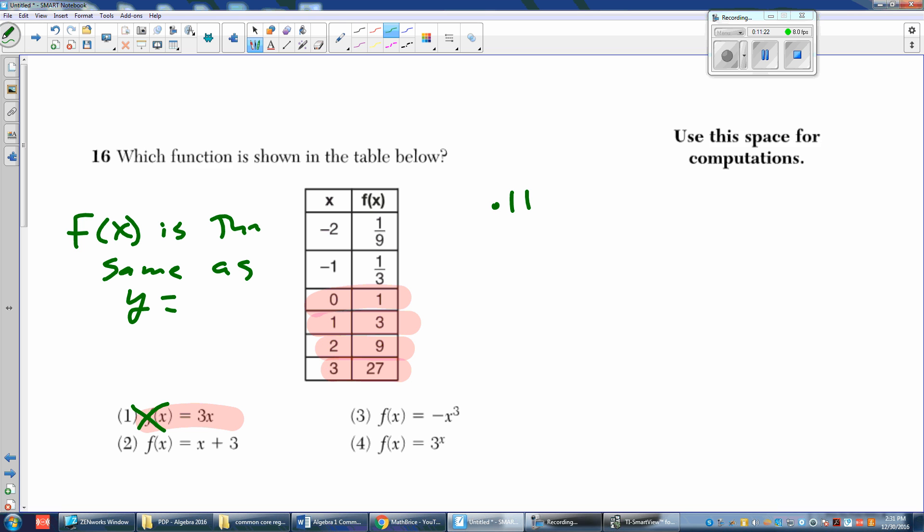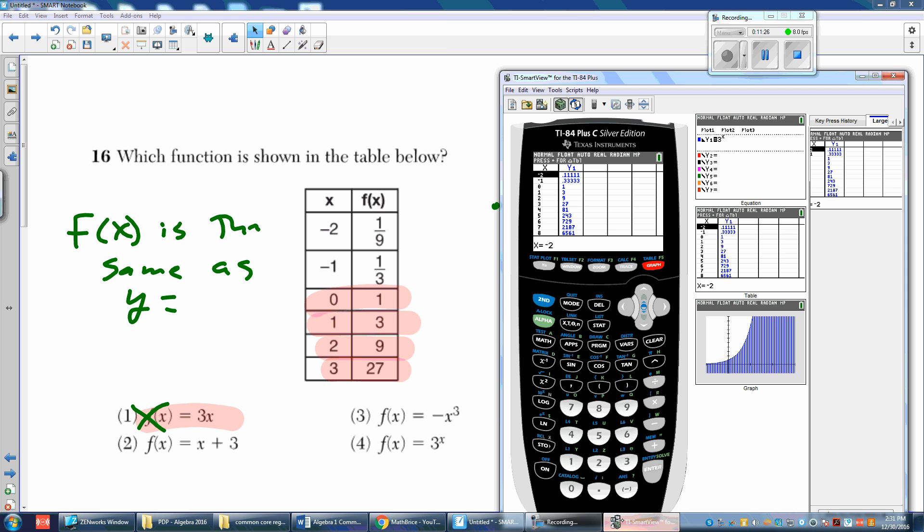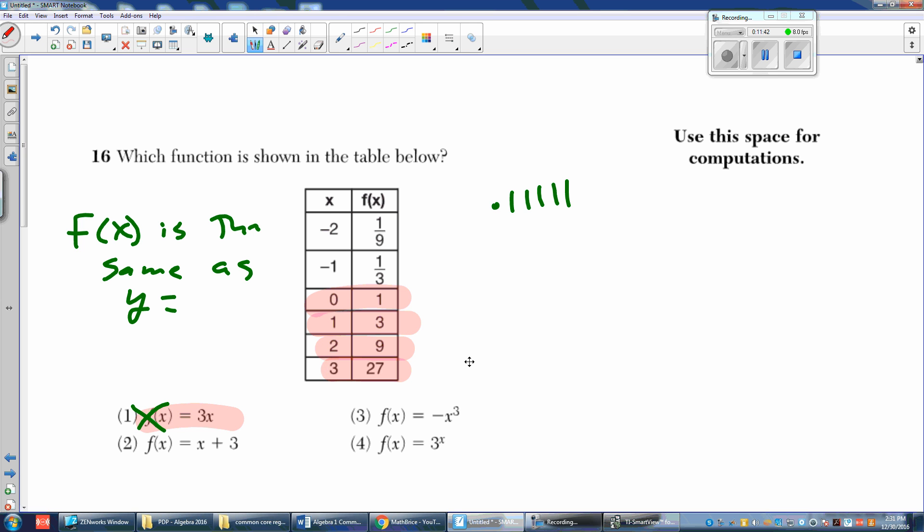So now out of curiosity, I wonder what 0.11111 is as a fraction, so I can go to my calculator again, go to the regular screen, and put in 0.1 repeating, a whole bunch of them, turn into a fraction, do math, enter, enter, and it gives me 1 over 9. So that one matches also. So to turn a decimal into a fraction, you hit math. Math is not spelled with an E. Math, enter, and then enter again, as long as the decimal is already on the screen.